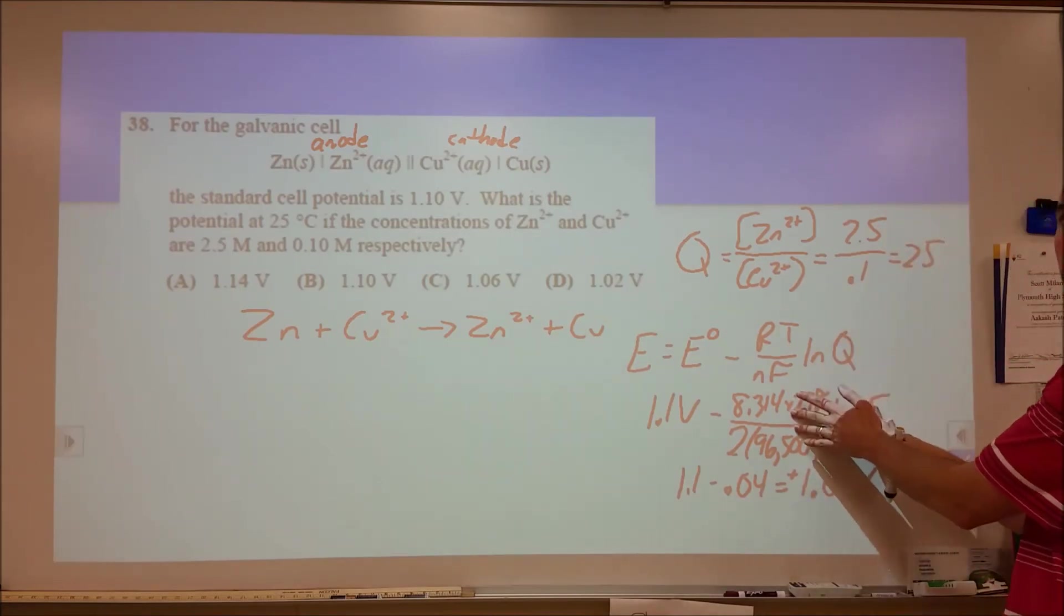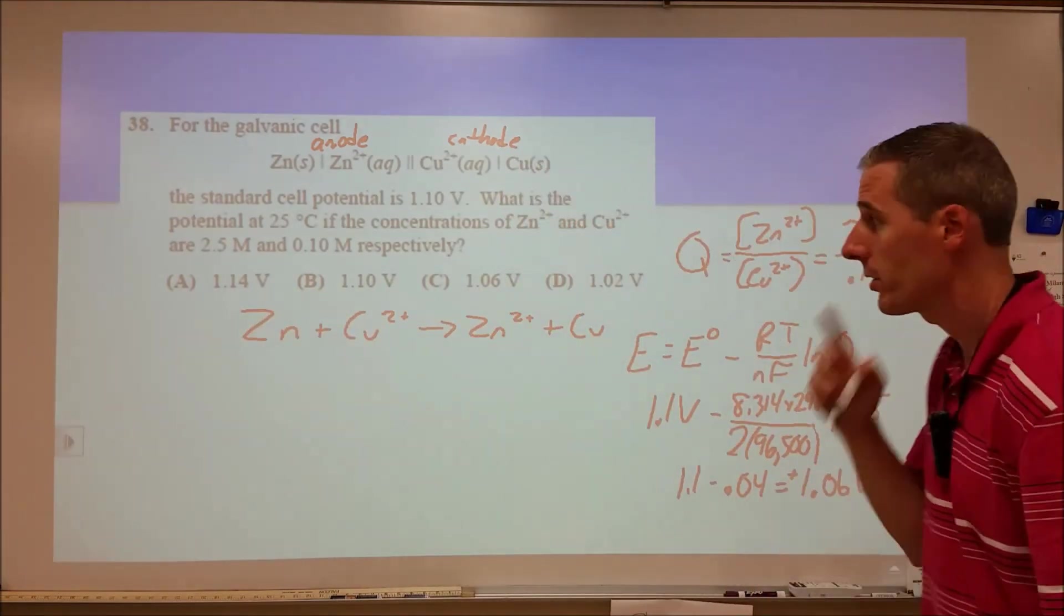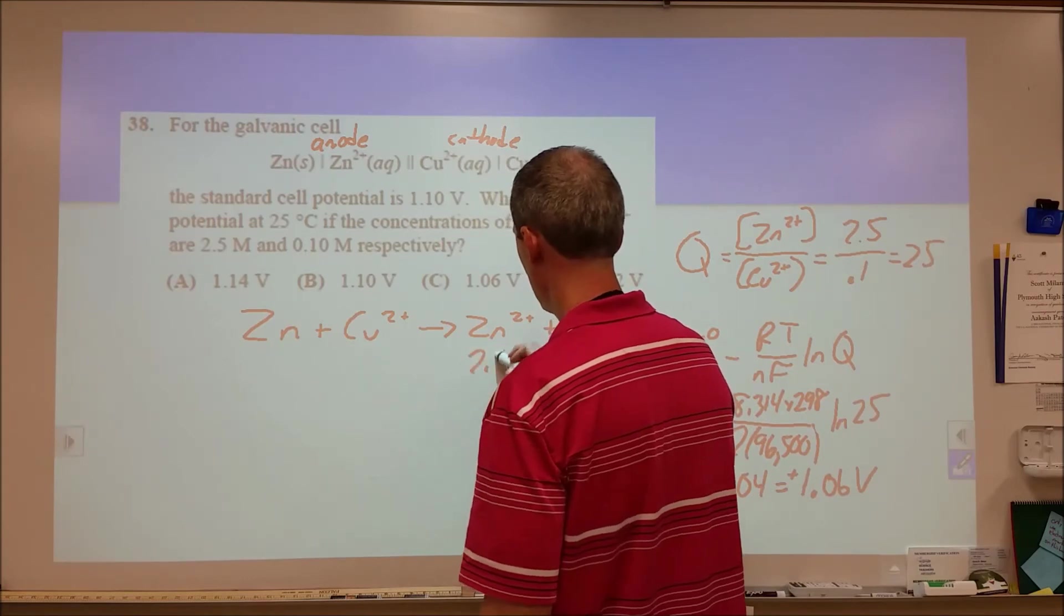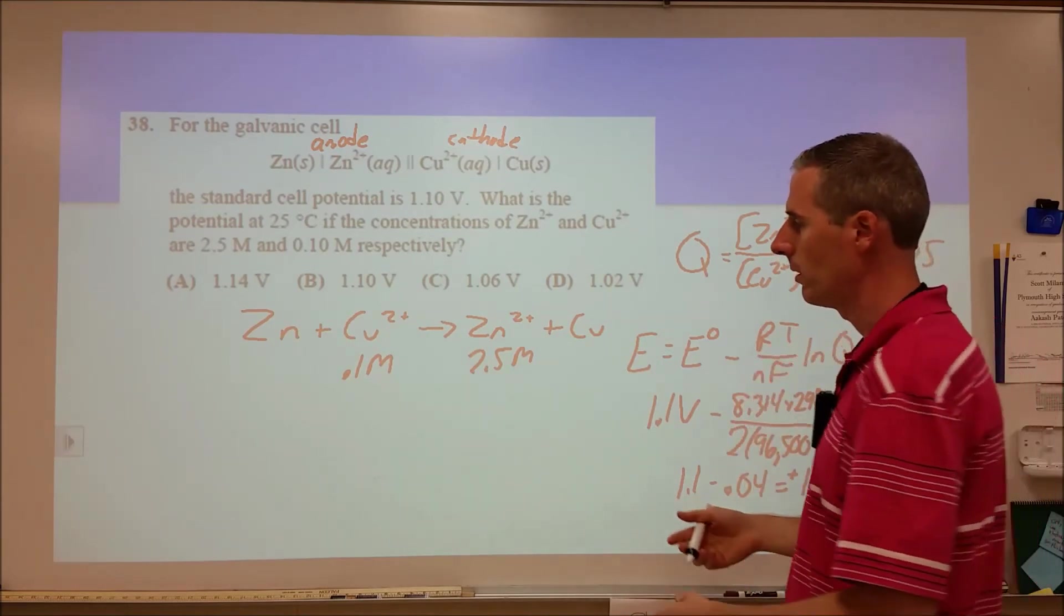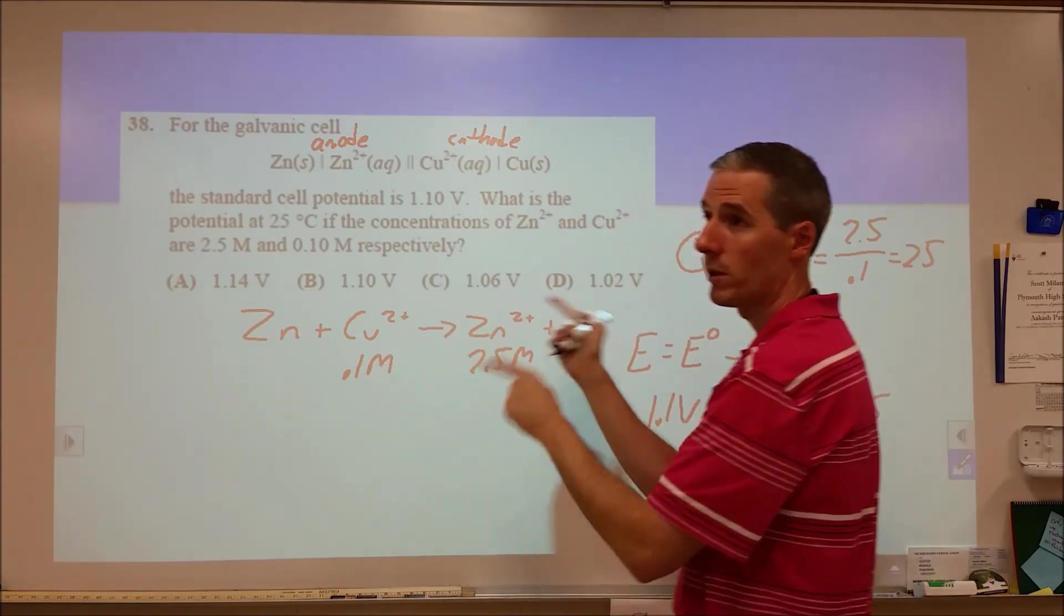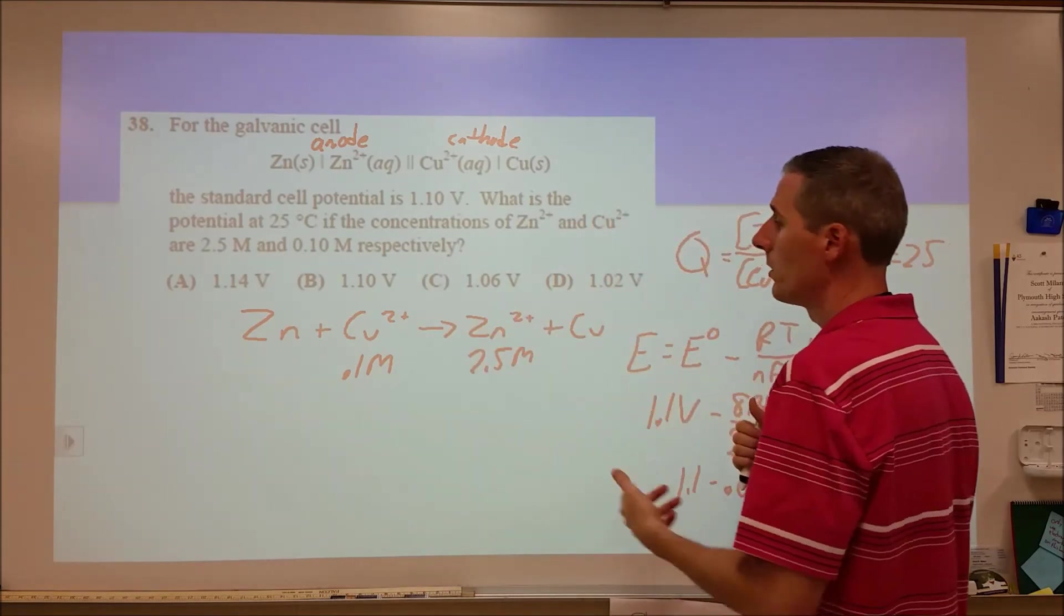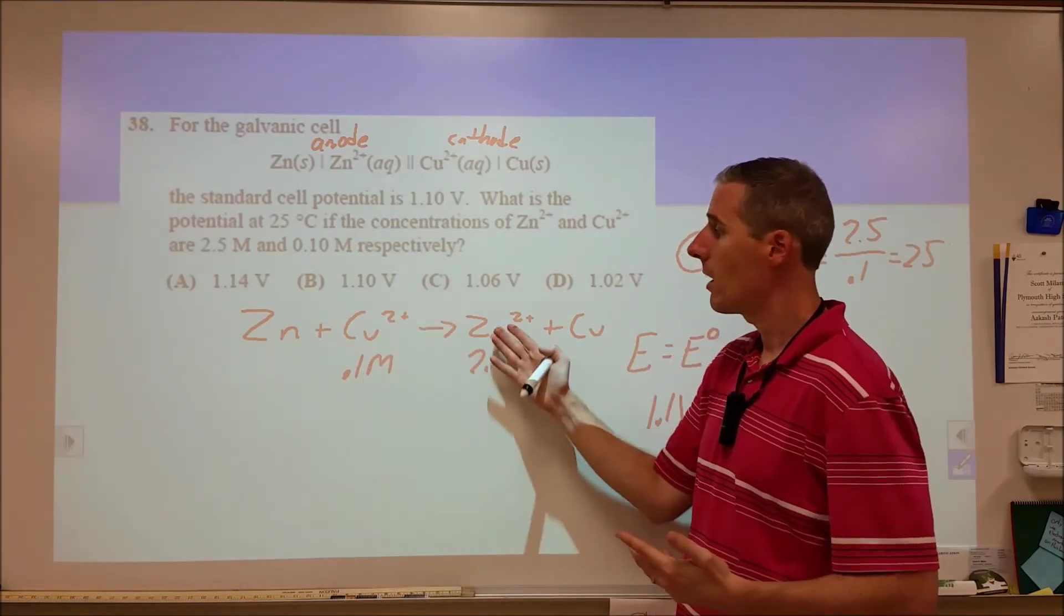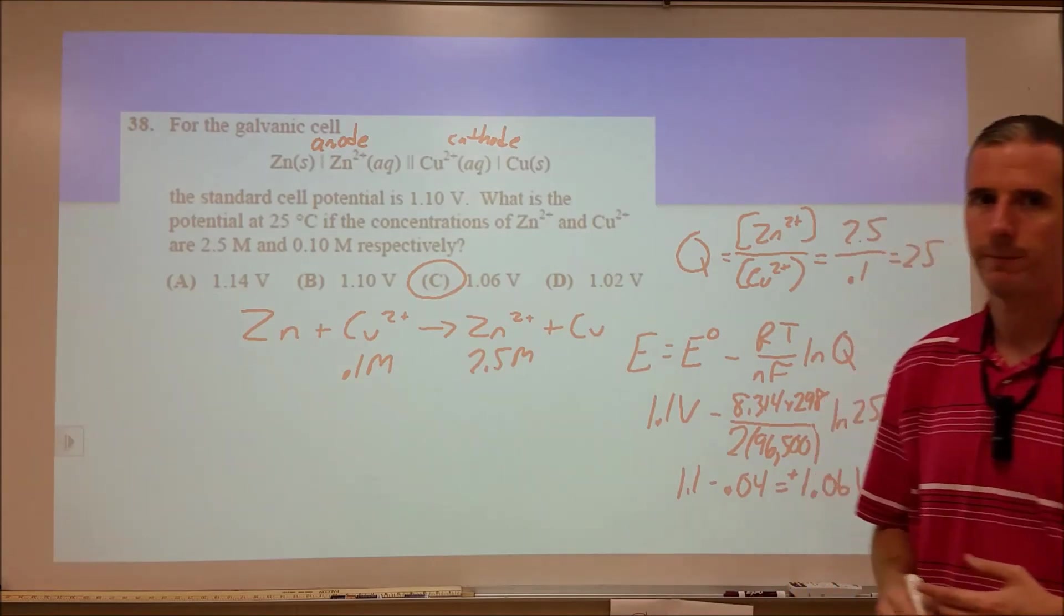So we get 1.1 minus 0.04, comes out to plus 1.06 volts. However, I just recommend getting a number of 0.04 and saying it's either got to be 1.06 or 1.14. Then ask yourself, should my voltage be going up or down? If I look at my reaction, I've got 2.5 molar zinc and 0.1 molar of the copper 2+. The way I think of that is your little Le Chatelier's principle trick. I have a low concentration of this, a high concentration of this that's causing a shift towards this side. That's bad for my voltage. I want my reaction to be proceeding spontaneously in this direction. So that means my voltage is going down. Another way to think of this is my battery is getting used up. My concentration of this is going down, my product's going up. It's not as fresh as it once was, the voltage is a little lower. C is my answer.